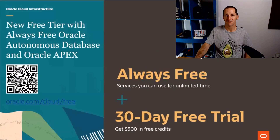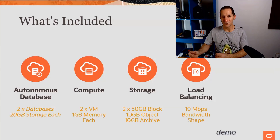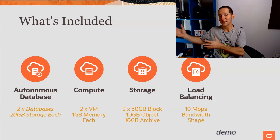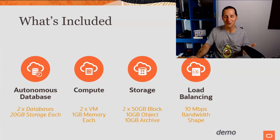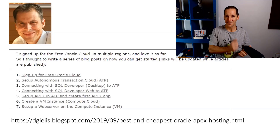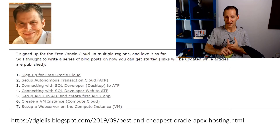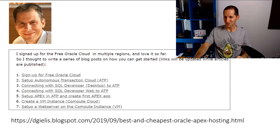When you sign up for the free autonomous database, you get the databases, compute nodes, storage, and load balancing free and free forever. The 30-day trial lets you use all the other Oracle Cloud services as a trial, but when that expires, your databases, compute nodes, storage, and load balancing remain free forever. A friend of mine, Dimitri, ran a fantastic series of blog posts walking through every single step — how to sign up, connect to your cloud, create your database, create your first VM. By the end you'll have databases, a web server, and APEX running — the whole lot — all free and free forever.